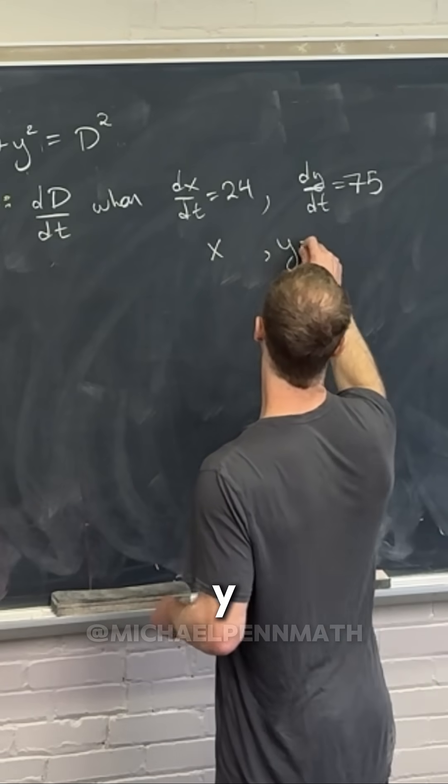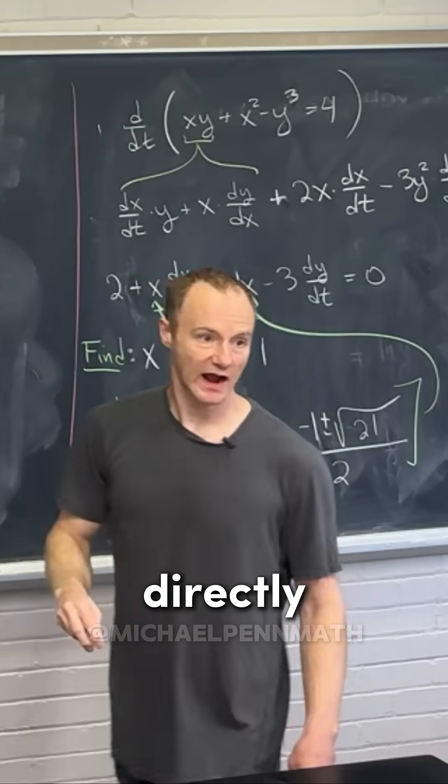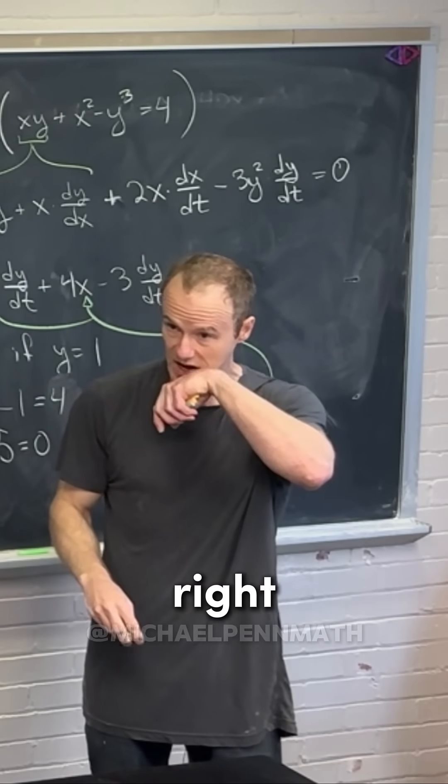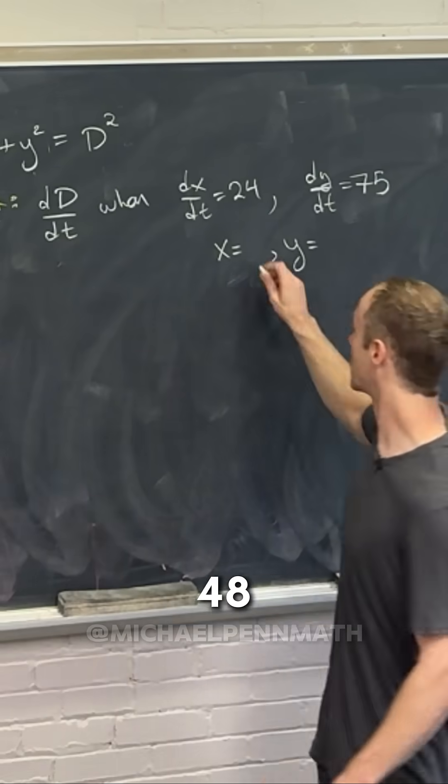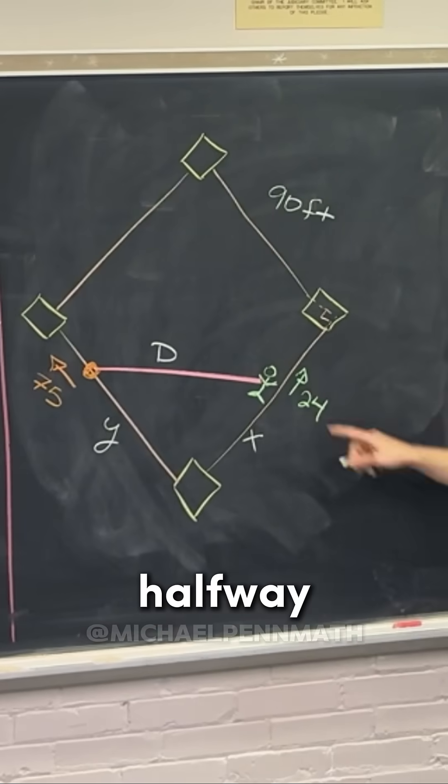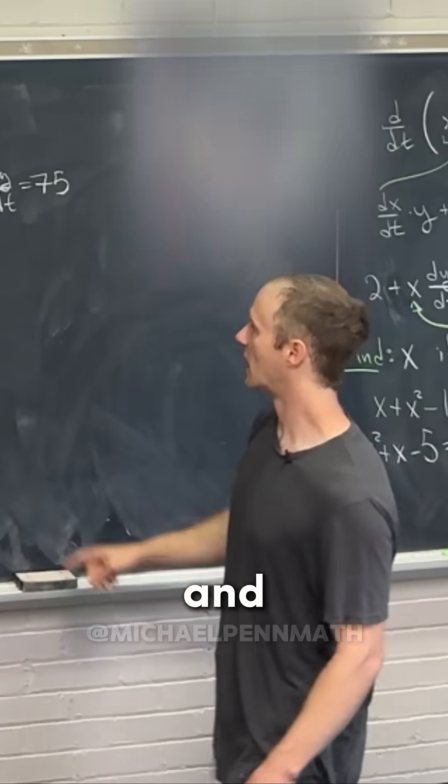We also need x and y, which aren't directly given, but there's enough information to grab them. After two seconds, the person has gone how far? Yeah, 48. So they're almost halfway between the bases.